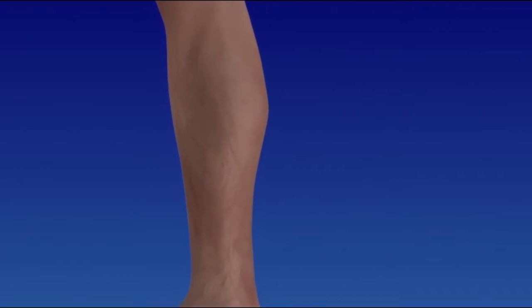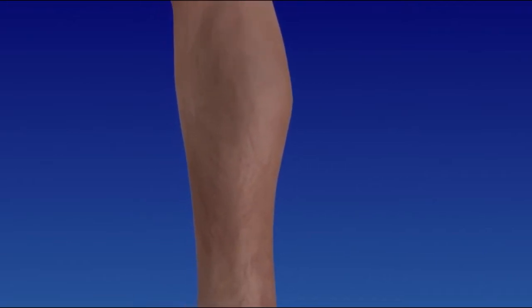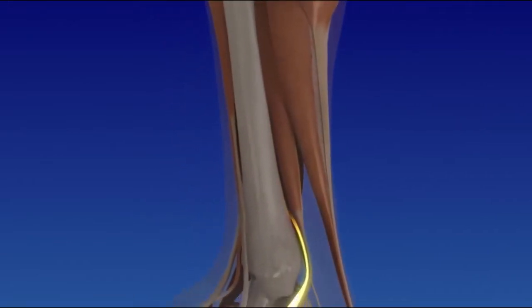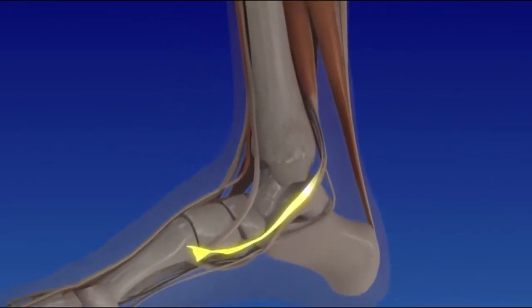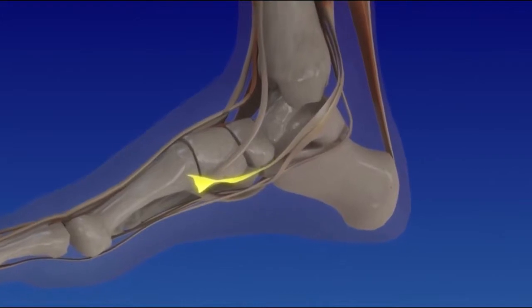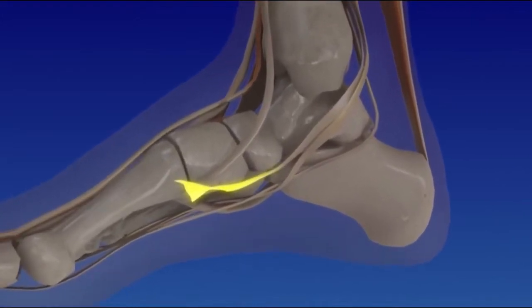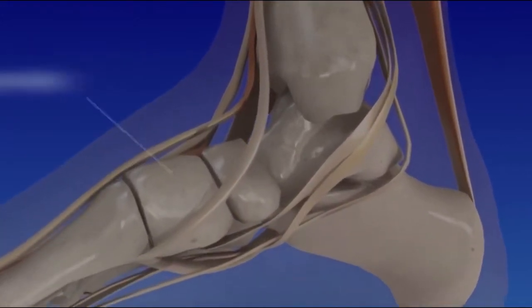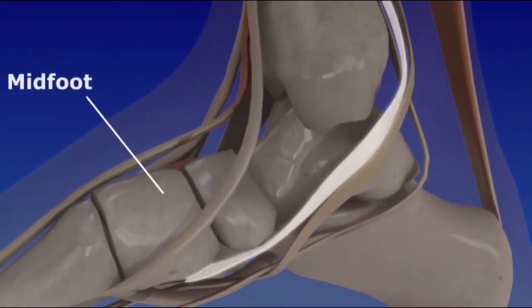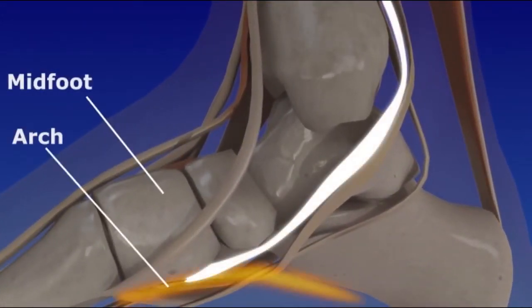The posterior tibial tendon connects at the calf, travels around the ankle joint, and attaches to the bones in the midfoot. It maintains the arch in your foot and provides stability.